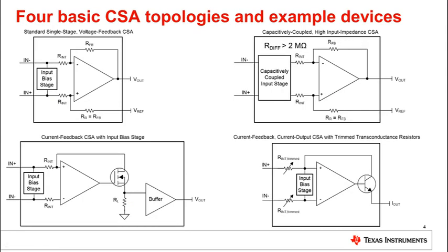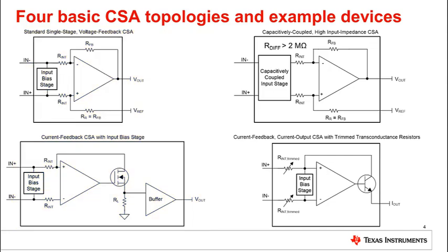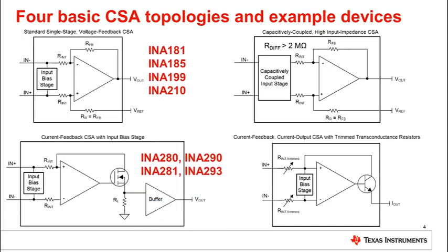Here are some examples of current sense amplifier topologies. On the left, we have the low input impedance architectures, where input differential resistance is in the range of a few kilo ohms. Given the positioning and the low differential impedance of their input bias stage, these devices will experience the highest error due to input filters. The INA185 and INA281 are some examples of these devices.